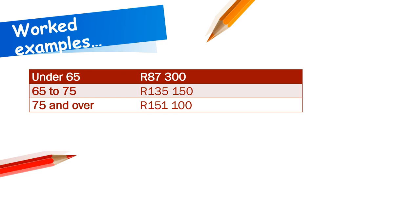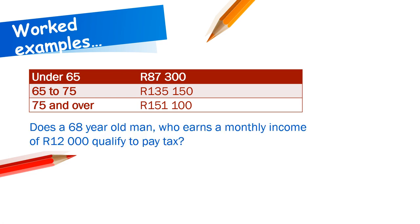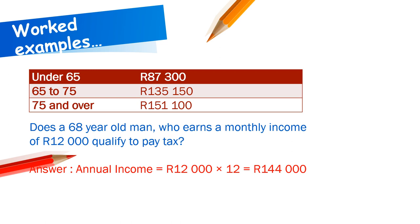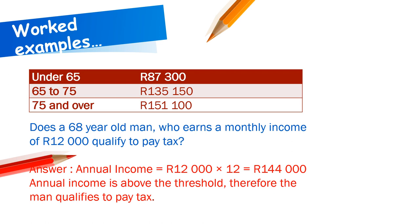Does a 68-year-old man earning a monthly income of R12,000 qualify to pay tax? Annual income = R12,000 × 12 = R144,000. For someone aged 68 (between 65 and 75), the tax threshold is R135,150. Since R144,000 exceeds R135,150, this individual qualifies and must pay tax.